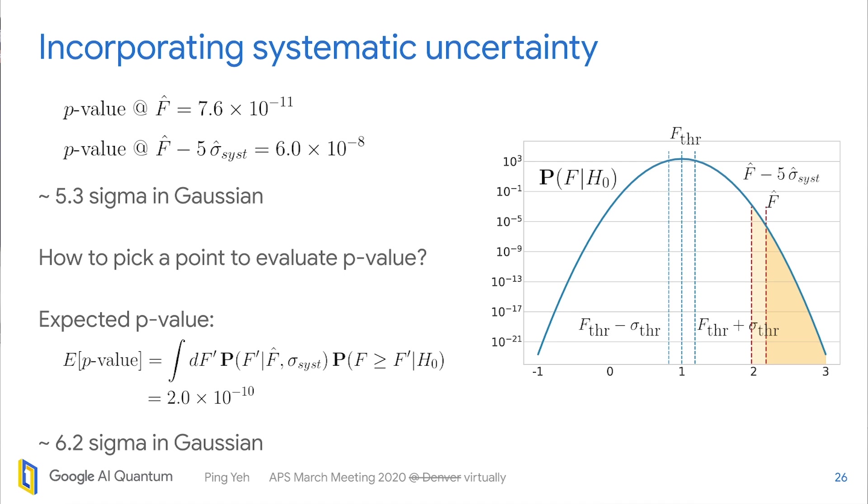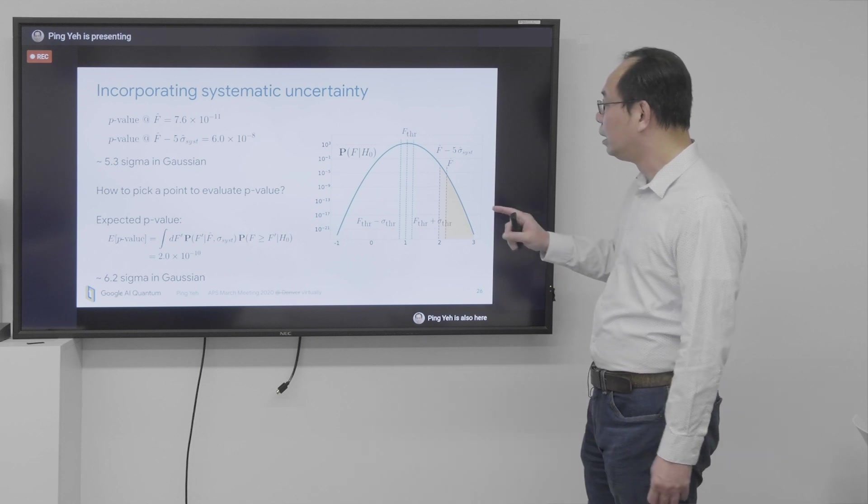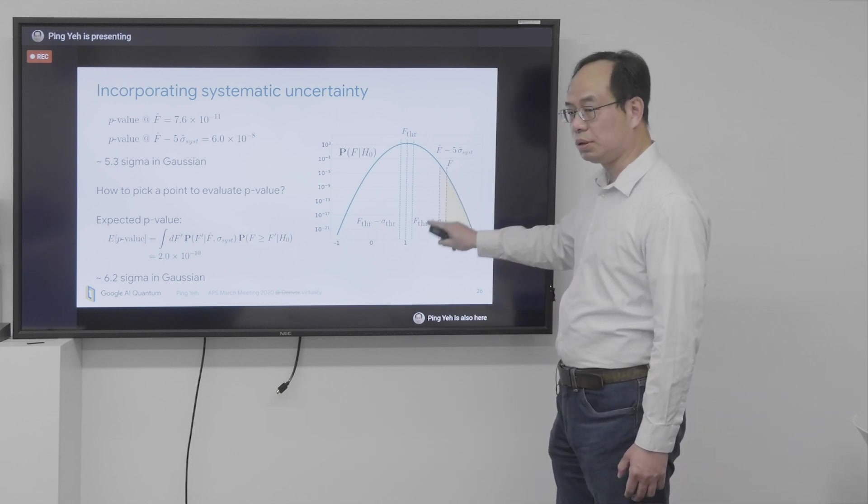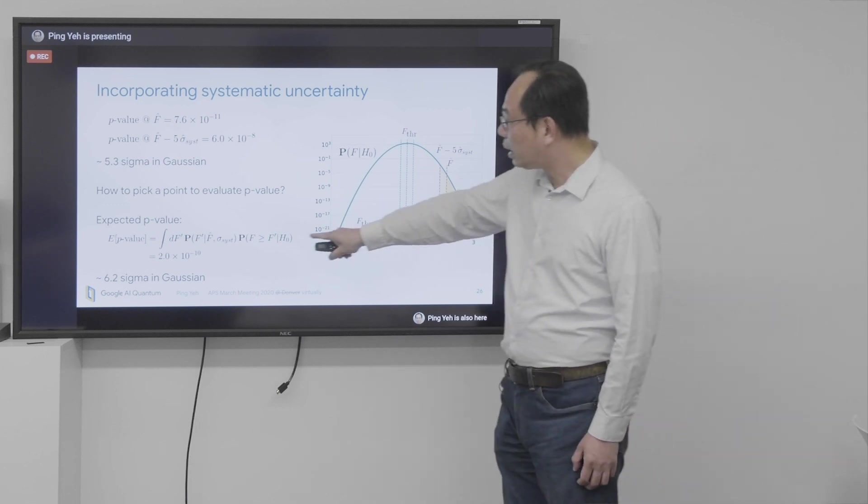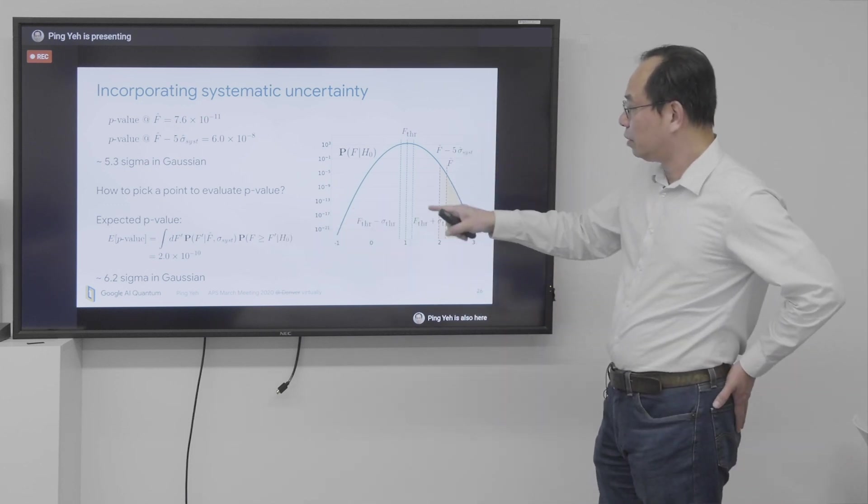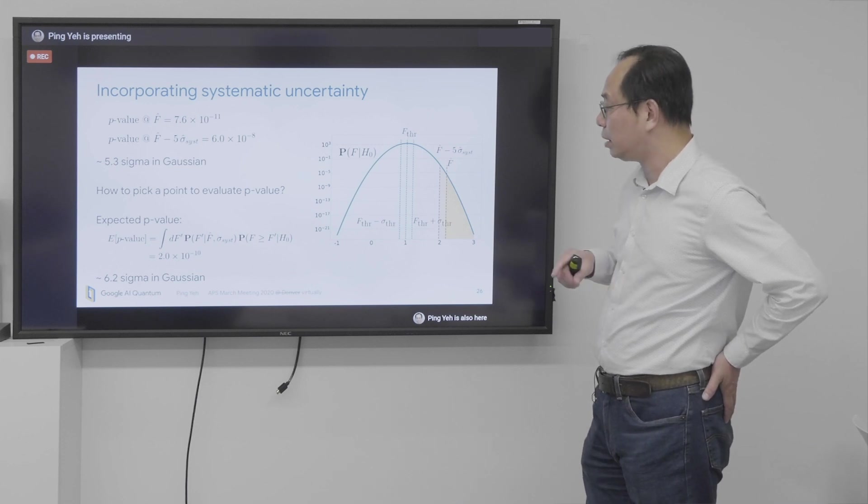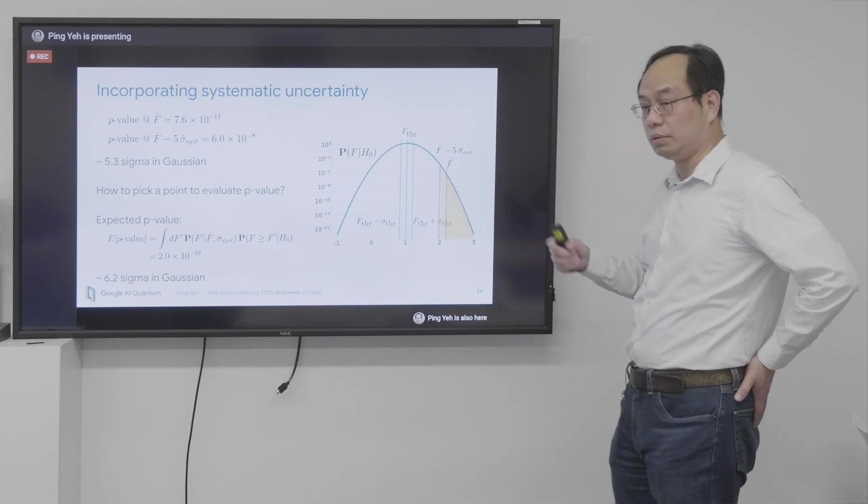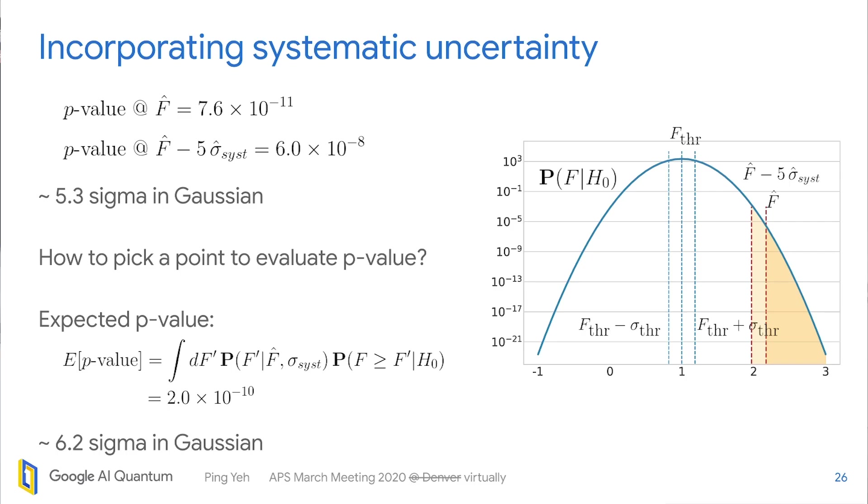So we found out that, actually, we can do an expectation value of p-value by integrating the p-value with this Gaussian distribution around F hat. And after we do that, we get a p-value of 2 times 10 to minus 10, which corresponds to about 6.2 sigma in Gaussian. So that's our final p-value for the whole quantum supremacy experiment.